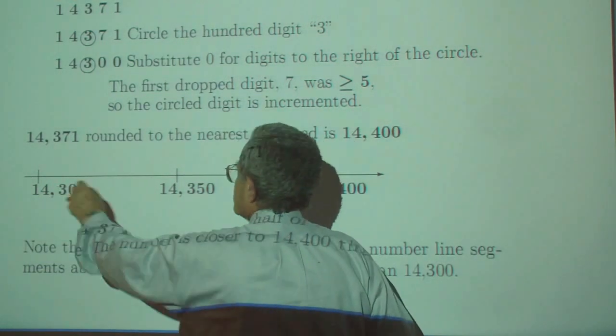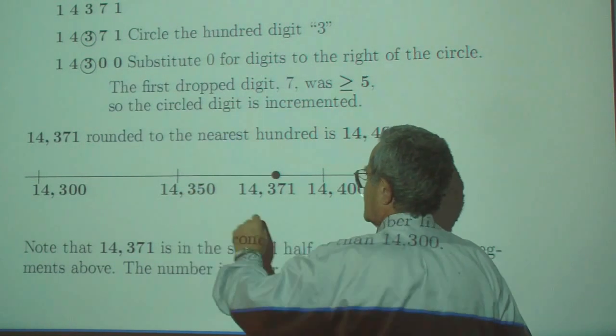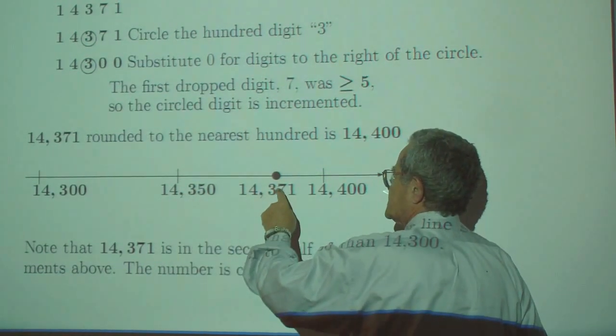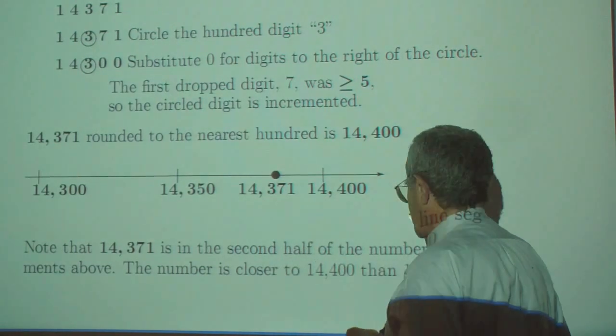We are between 14,300 and 14,400. Here's the middle. 14,371 is closer to the right end. So that's what we are rounding to.